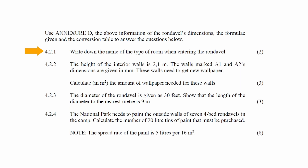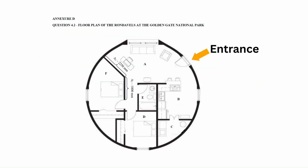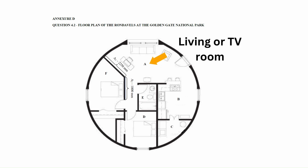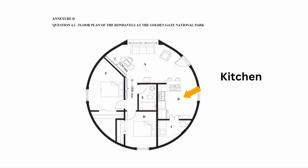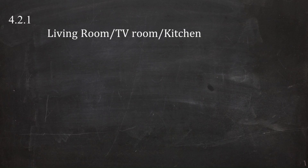In question 4.2.1, you have to write down the name of the type of room when entering the Rondavel. From the floor plan, we see that the type of room when entering can be classified as the living room, the TV room, or the kitchen. Any one of these answers is acceptable.